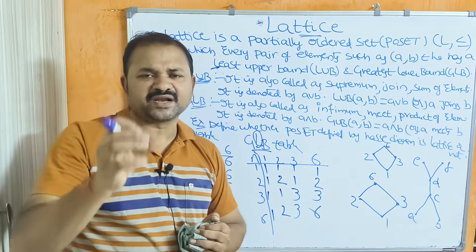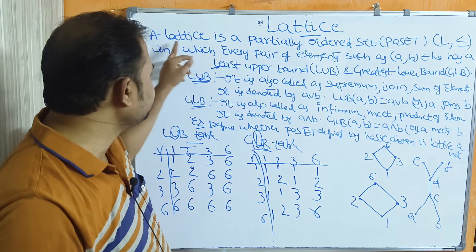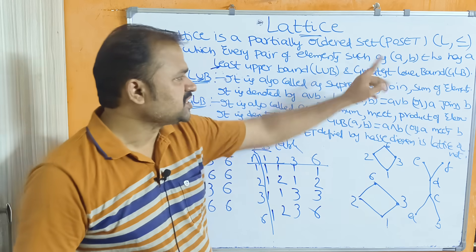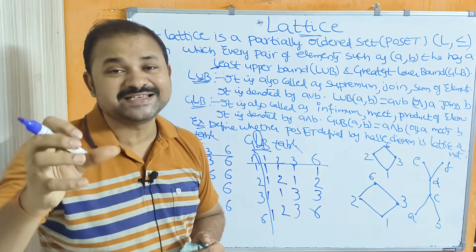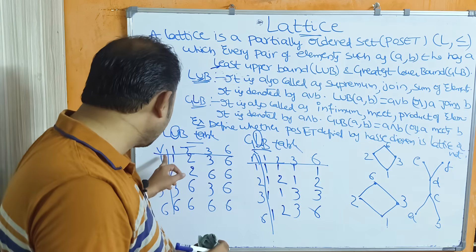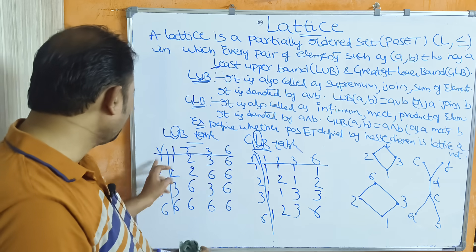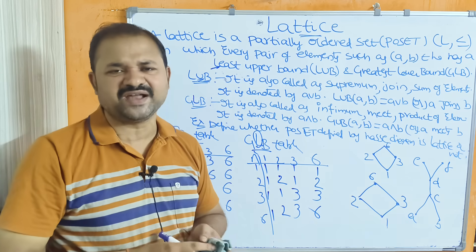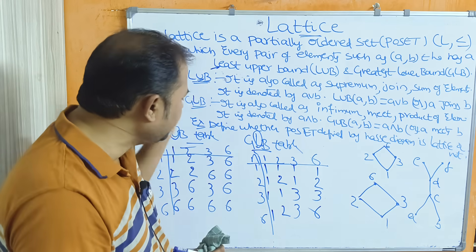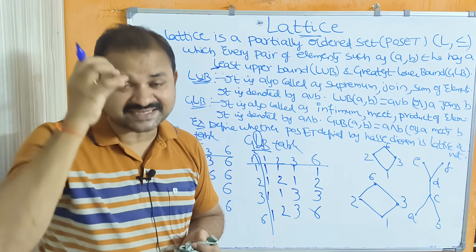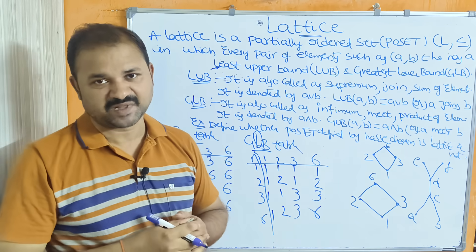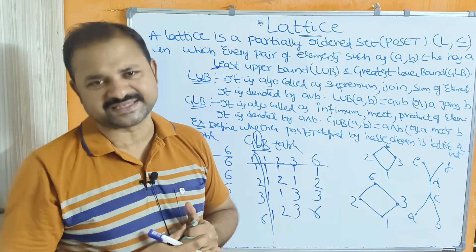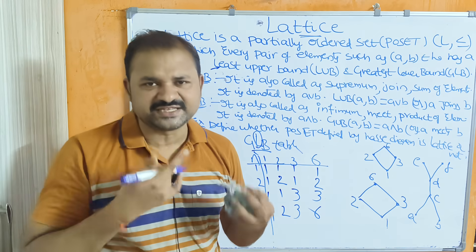If we observe the LUB and GLB tables for the first example, every pair of elements has a value. Since every pair has a value in both the LUB and GLB tables, we can say that the first Hasse diagram is a lattice. If for some pair there is no value, then it is not a lattice.